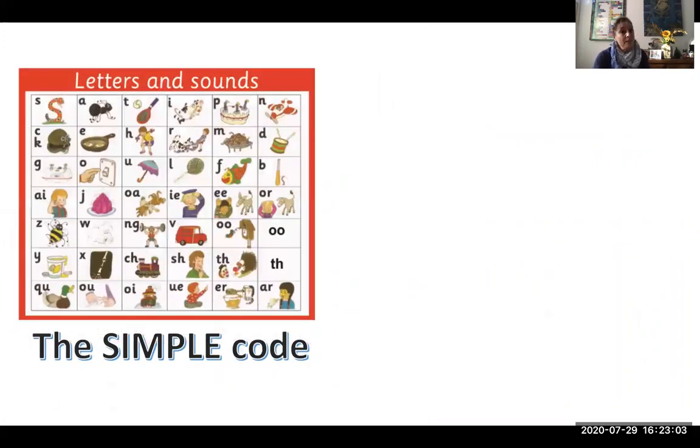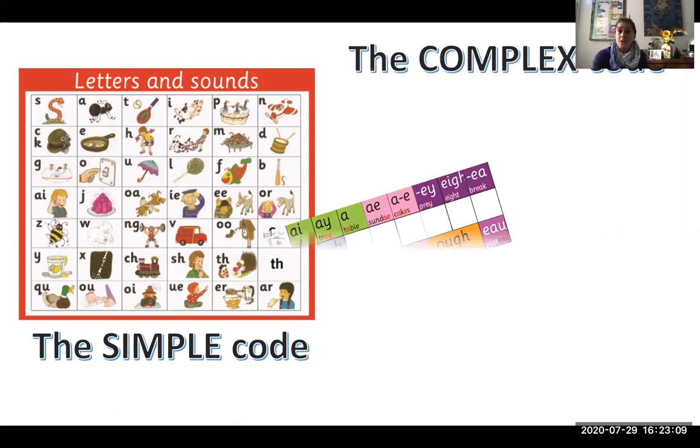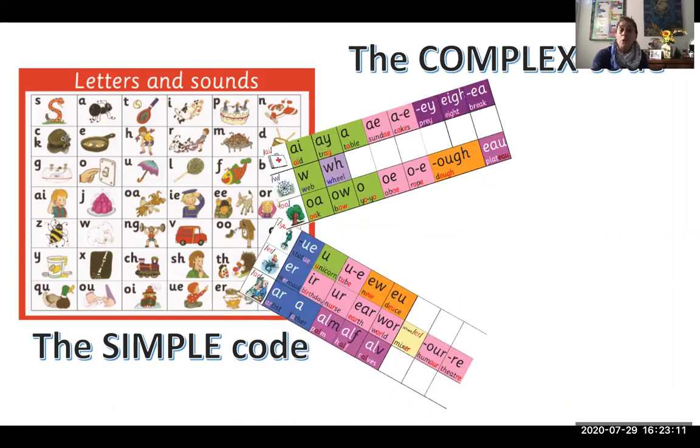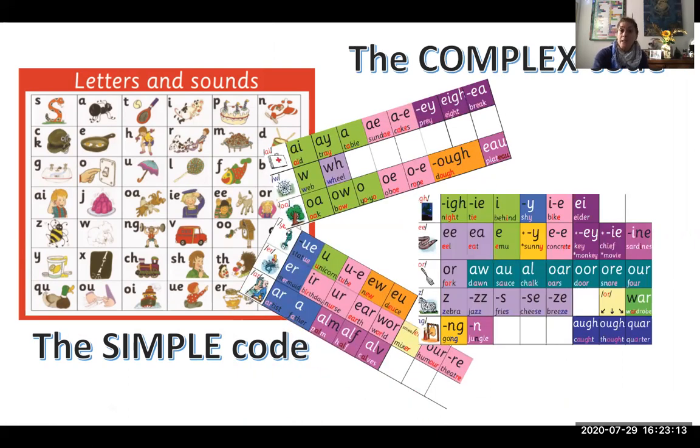Now, it has a simple code that will be this 44 plus sounds. And it has the complex code that is the more than 150 ways of writing it. And here you can see the influence, the historical influence of all this that we talked about.